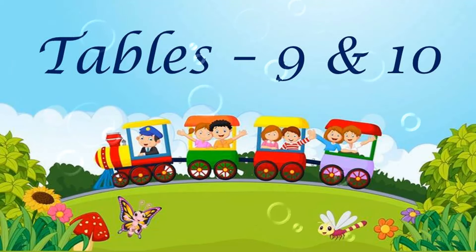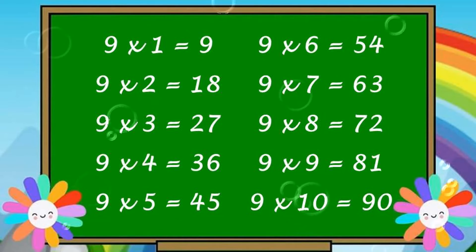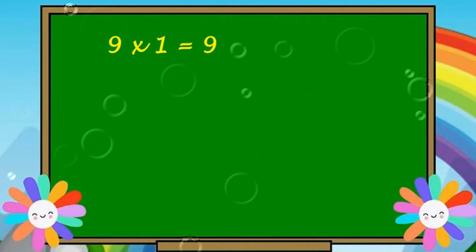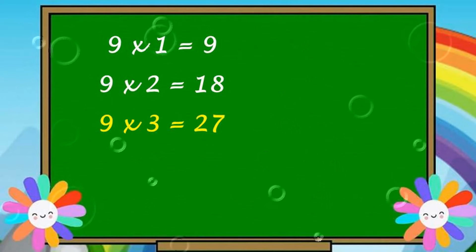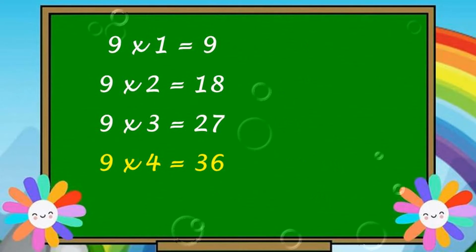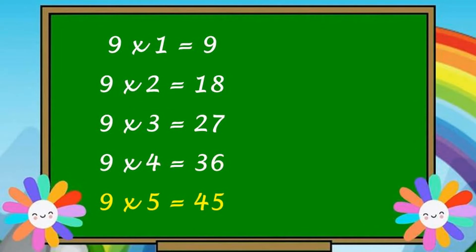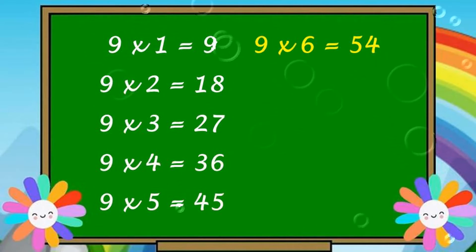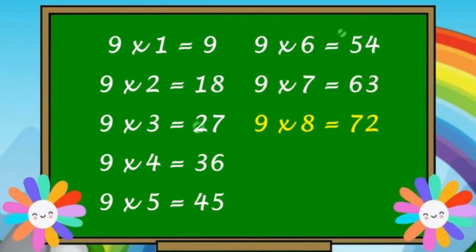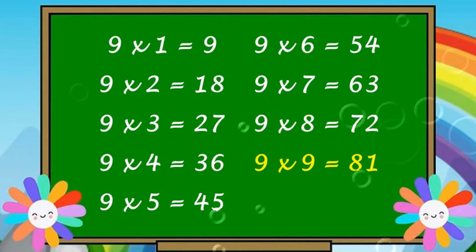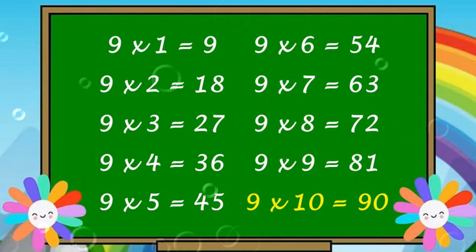Children, once again we can revise it. Coming to the first table, table of 9. 9 1s are 9. 9 2s are 18. 9 3s are 27. 9 4s are 36. 9 5s are 45. 9 6s are 54. 9 7s are 63. 9 8s are 72. 9 9s are 81. 9 10s are 90.